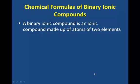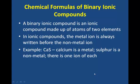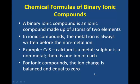A binary ionic compound is an ionic compound made up of atoms of two elements. In ionic compounds, the metal or positive ion is always written before the non-metal or negative ion. As an example, CaS, the chemical formula for calcium sulfide—calcium is metal, sulfur is non-metal. We can see from the formula that there is one ion of each.